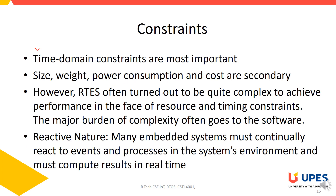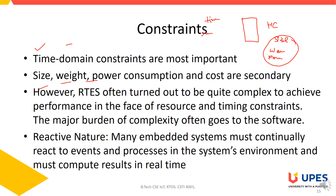Time constraints are the primary constraints, while size, weight, and power consumption are secondary constraints. When designing an embedded system, you pick a microprocessor or microcontroller based on your requirements of size, weight, and power consumption. The timing constraints and runtime constraints then rely on the software — some form of real-time operating system — which plays the major role in fulfilling timing constraints, space constraints, and runtime constraints. A real-time system should also be reactive in nature to respond to external events in real time.